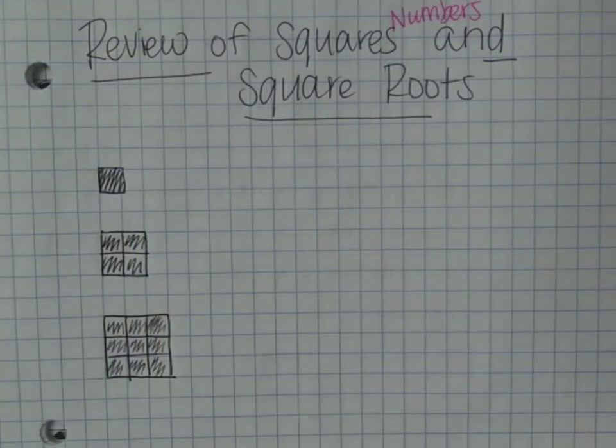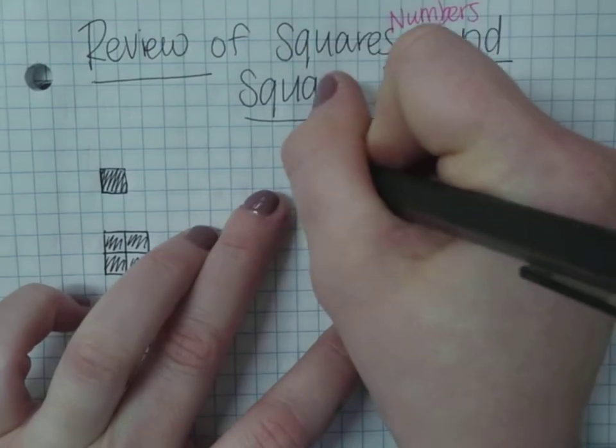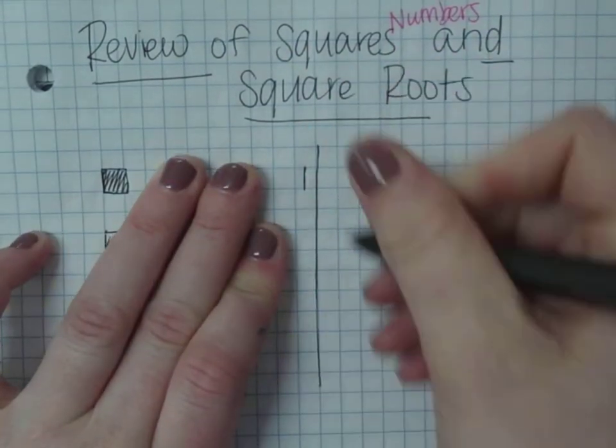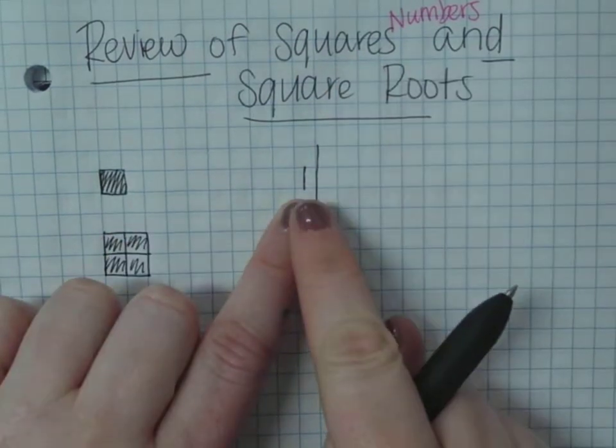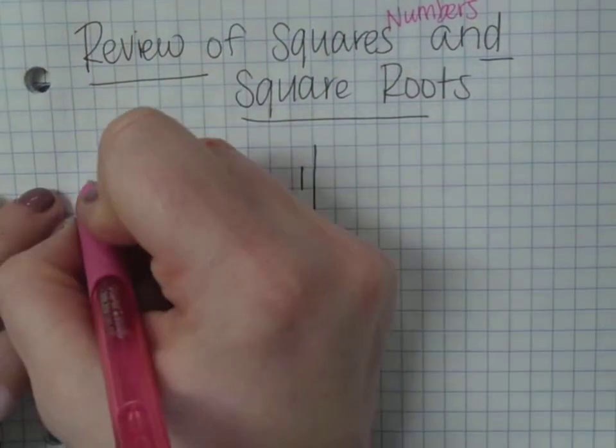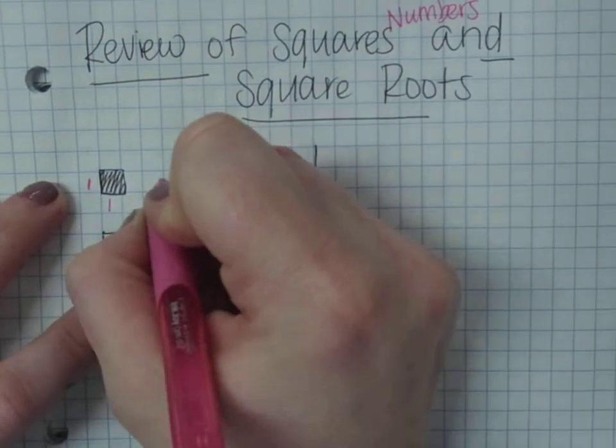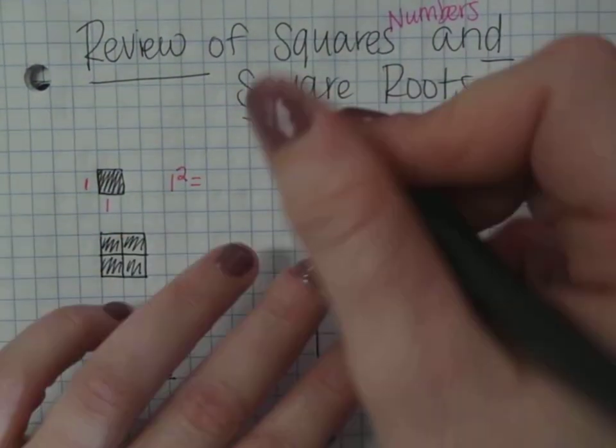So when I square a number, so let's say I have 1. Sorry, my pen's not working very well. And then I have 1 squared. So 1, or 1 times 1, so 1 squared equals 1.